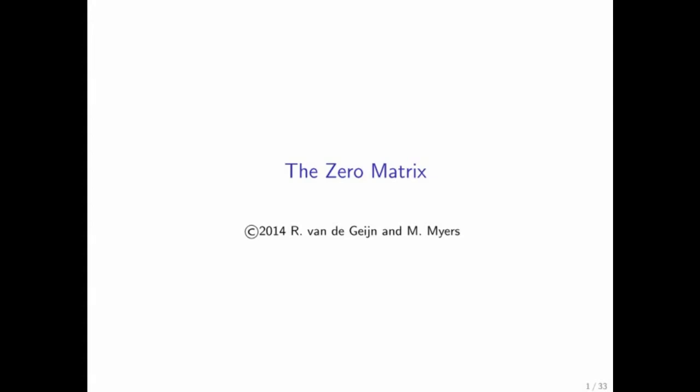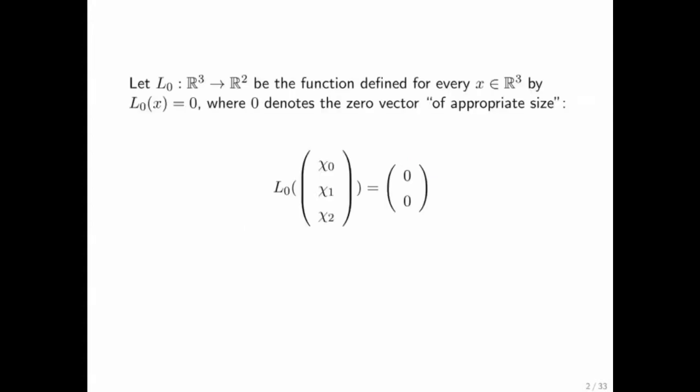We will start with a zero matrix. To motivate this, let's start with a vector function that takes vectors of size 3 to vectors of size 2. Now, this particular function, which we're going to denote by L sub 0, takes vectors x, and no matter what that vector is, it outputs a zero vector.